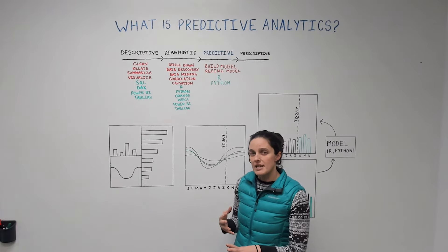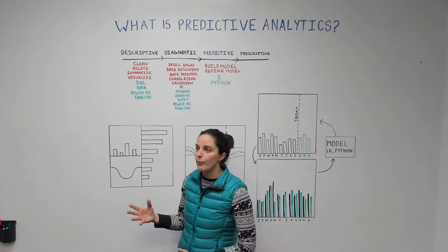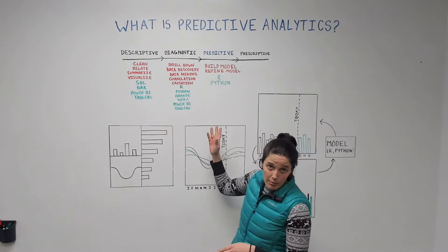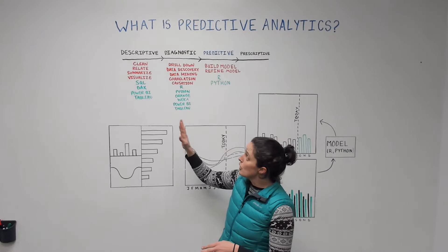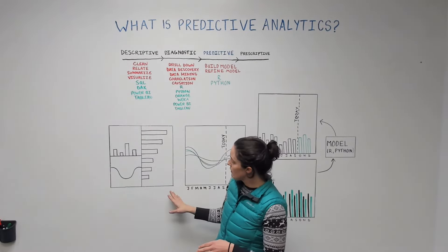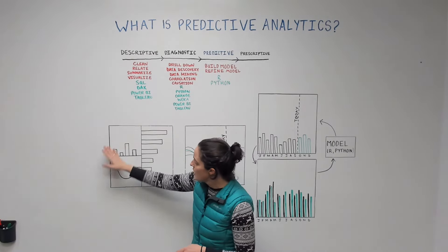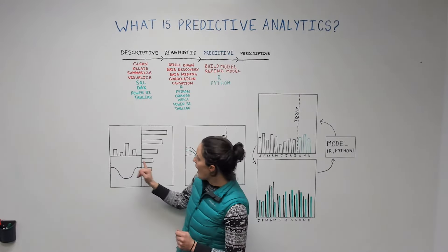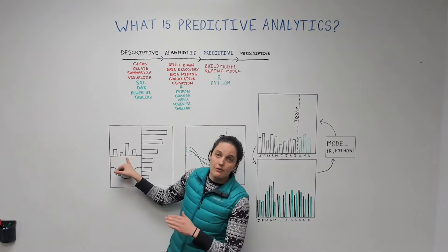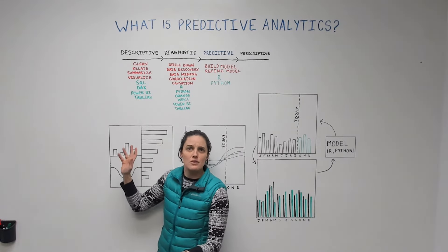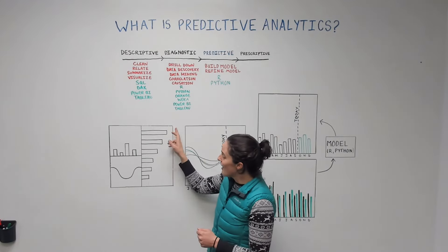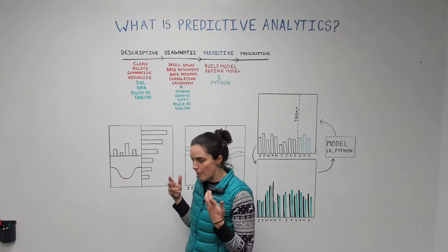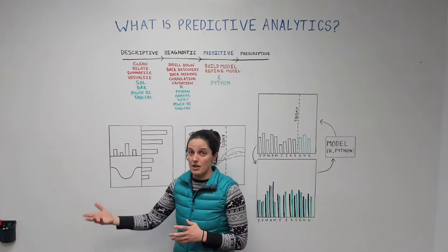Let's go with an example because that makes it easier to flow through what's actually happening here. Let's pretend that we are grocery store owners. If we're already talking about predictive analytics, you should have a pretty good grasp on descriptive and diagnostic analytics, so you probably already have a decent dashboard that tells you what's happening in your business right now — something like revenue by different departments like foods, meats, or pastry, how your sales change by product or over time.